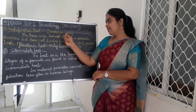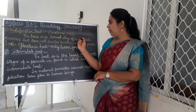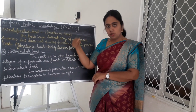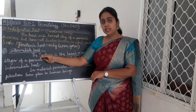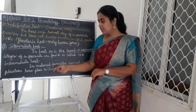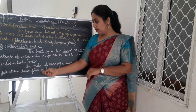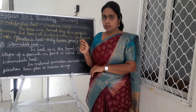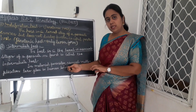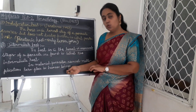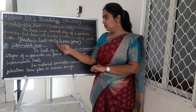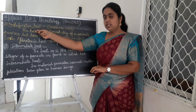Indefinitive host, also called paratenic host: the host in which the larval stage of the parasite survives but does not develop further. Only the larval stage is seen — it cannot develop further in the indefinitive host. Intermediate host: the host in which the larval or asexual stages of a parasite are found. Example — in malaria parasites, asexual multiplication takes place in human beings, so humans are the intermediate host.